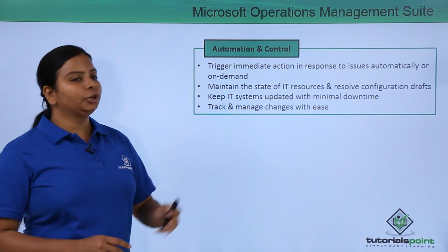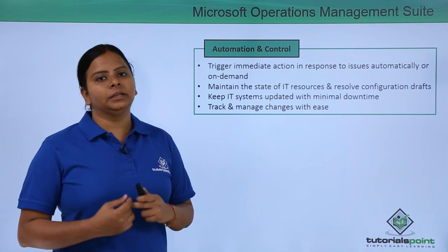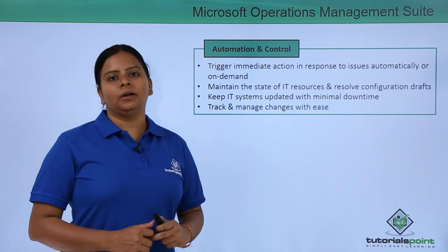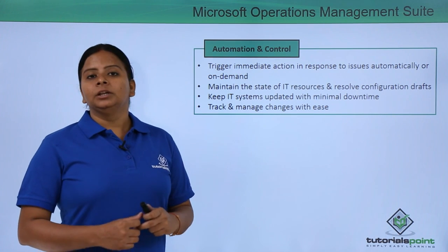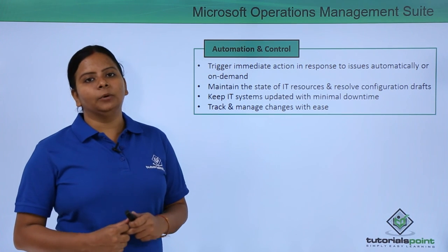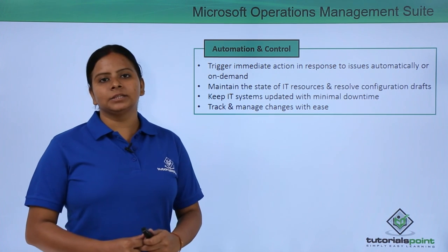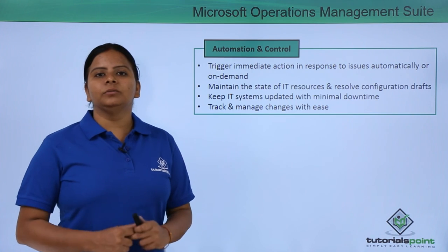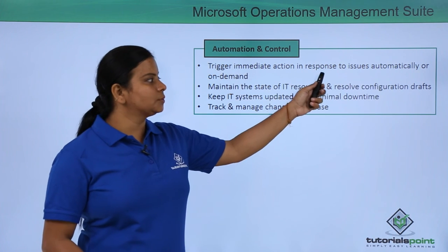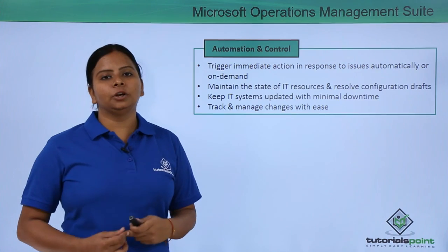OMS also features automation and control. As discussed previously, it can automate notifications if any changes occur into your platform where you have enabled this service. For example, if you took a backup last Saturday and scheduled the next backup for this Saturday, it will notify the user or administrator about the upcoming backup at that particular time — it will remind you. Similarly, it will trigger immediate action in response to issues if there are any problems in your system or backup.